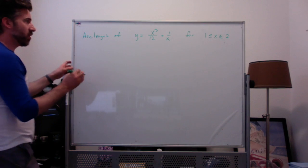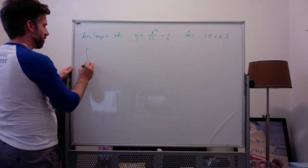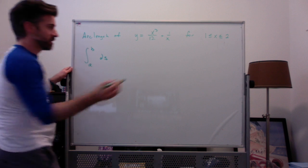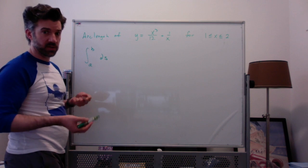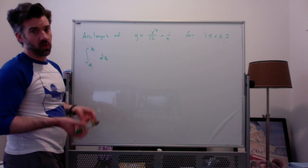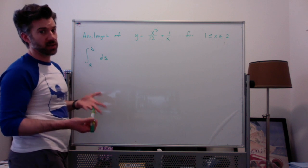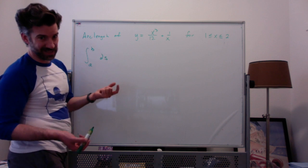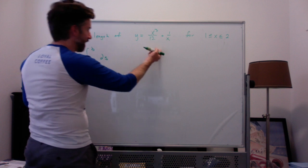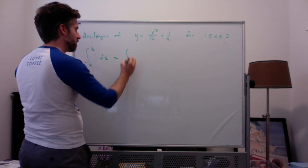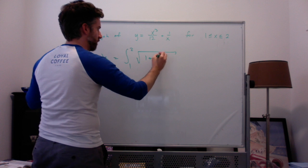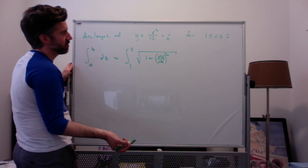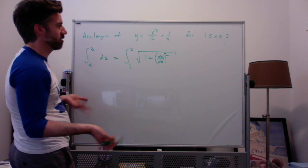The way you find arc length is by integrating from a to b of ds, where ds is the square root of 1 plus the derivative of your function of x squared — or in terms of y, or parametrically as dy/dt squared plus dx/dt squared. Since we have a function of x, it's going to be the square root of 1 plus dy/dx squared, which you can also write as f prime of x squared.